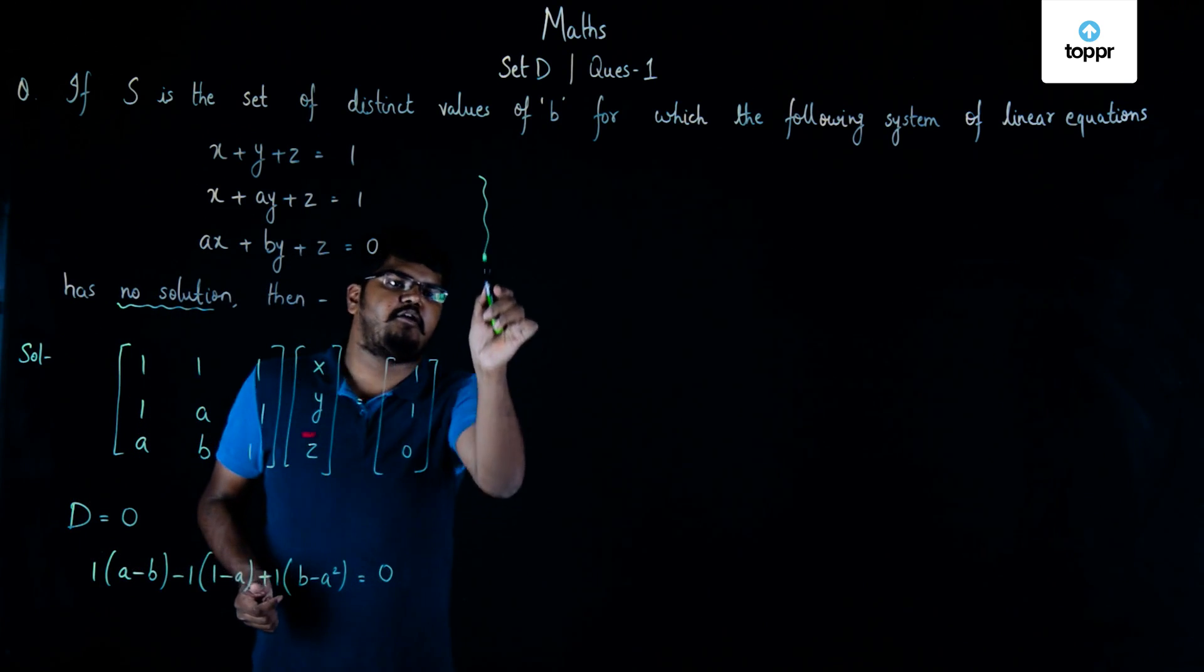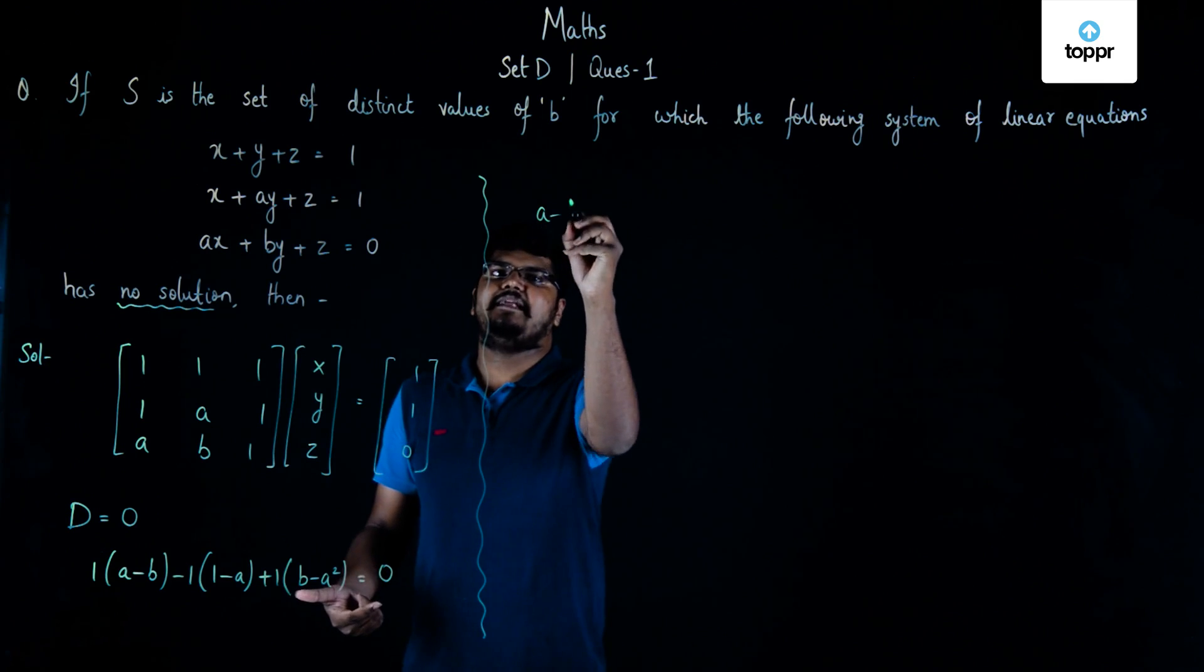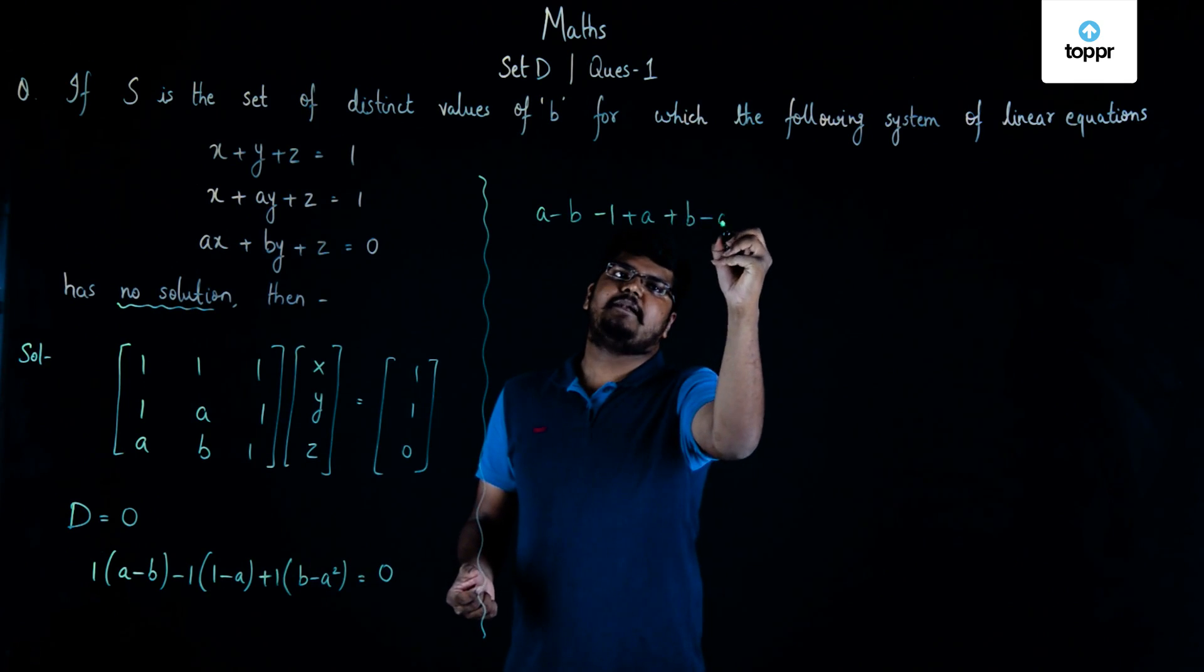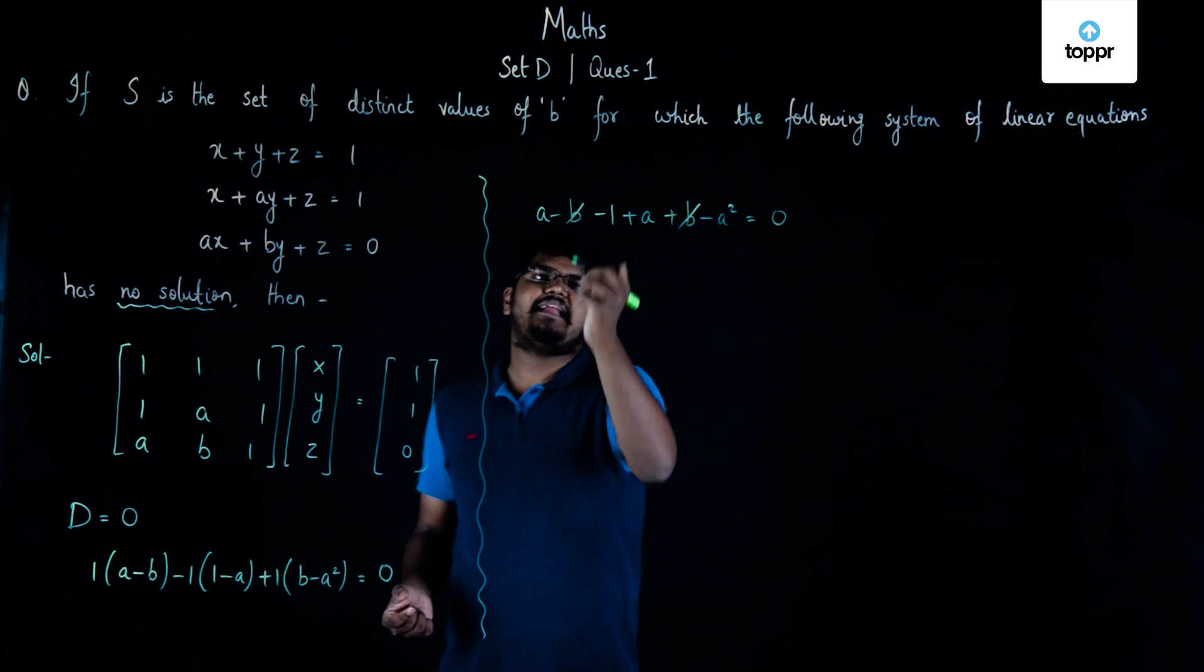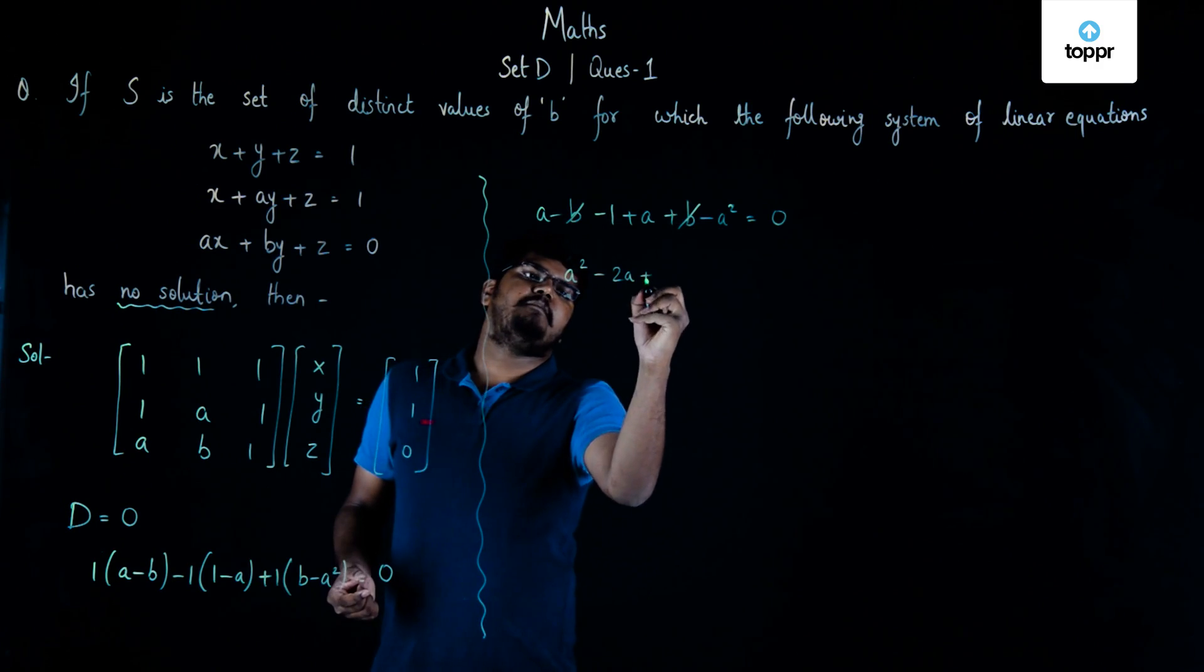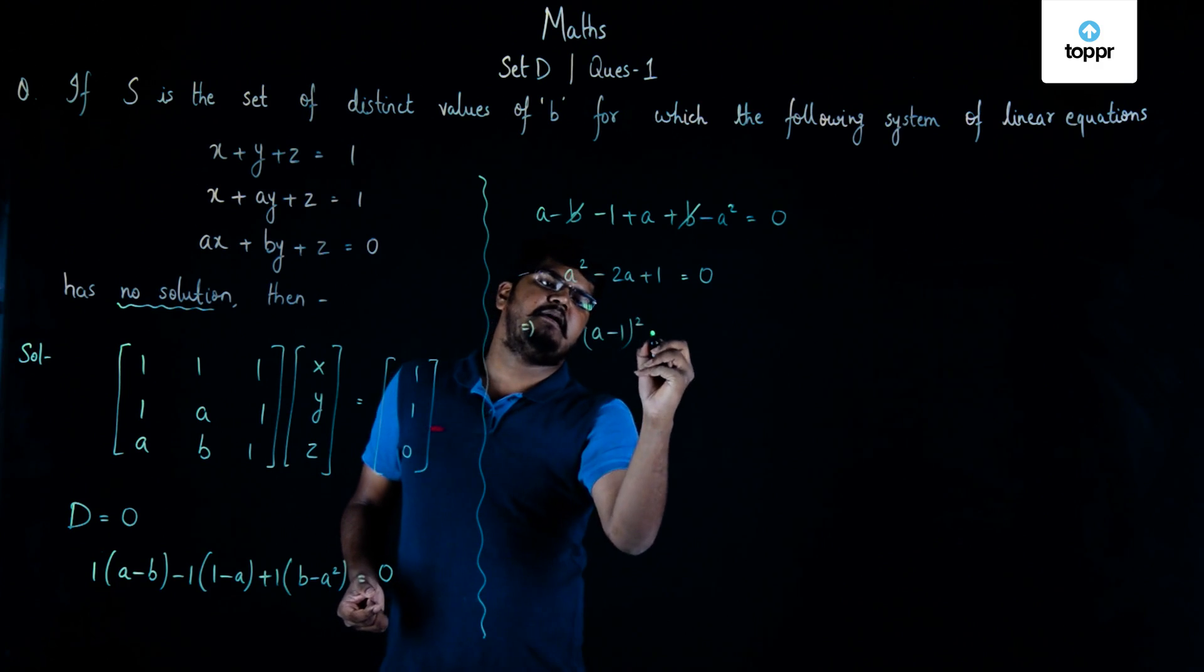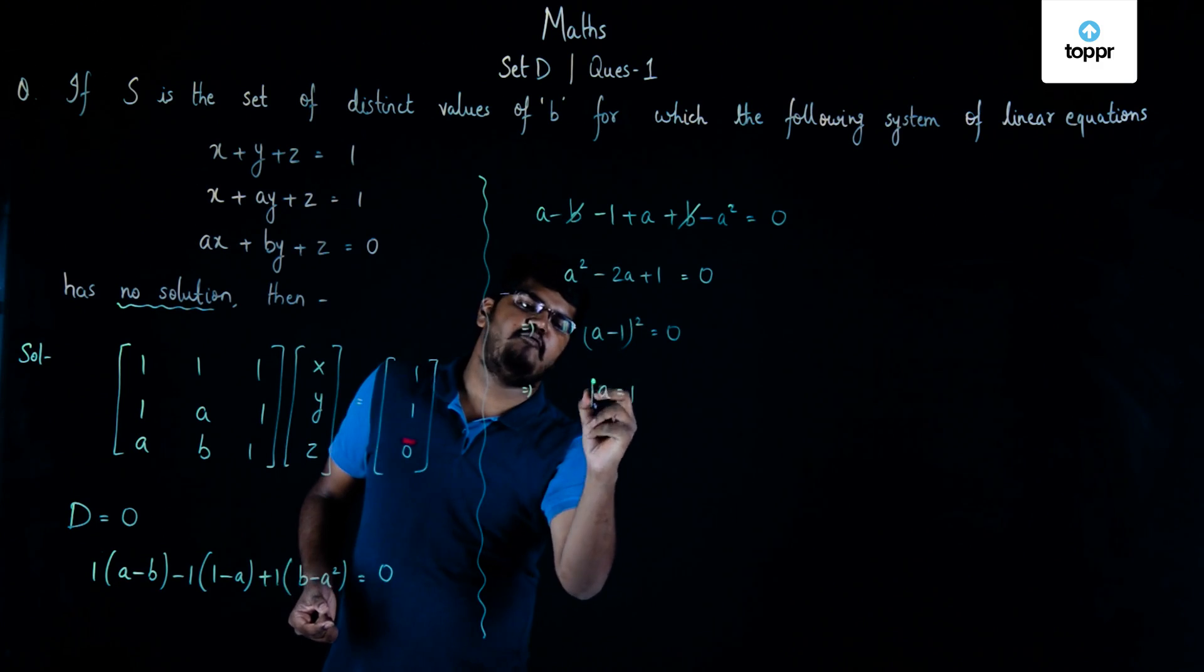Now, if we simplify this particular solution, then this will give us A minus B minus 1 plus A plus B minus A square is equal to 0. This B and B will cancel each other. We will have A square minus 2A plus 1 is equal to 0 upon rearranging. This will give us (A minus 1) whole square is equal to 0, and hence the value of A will be equal to 1.